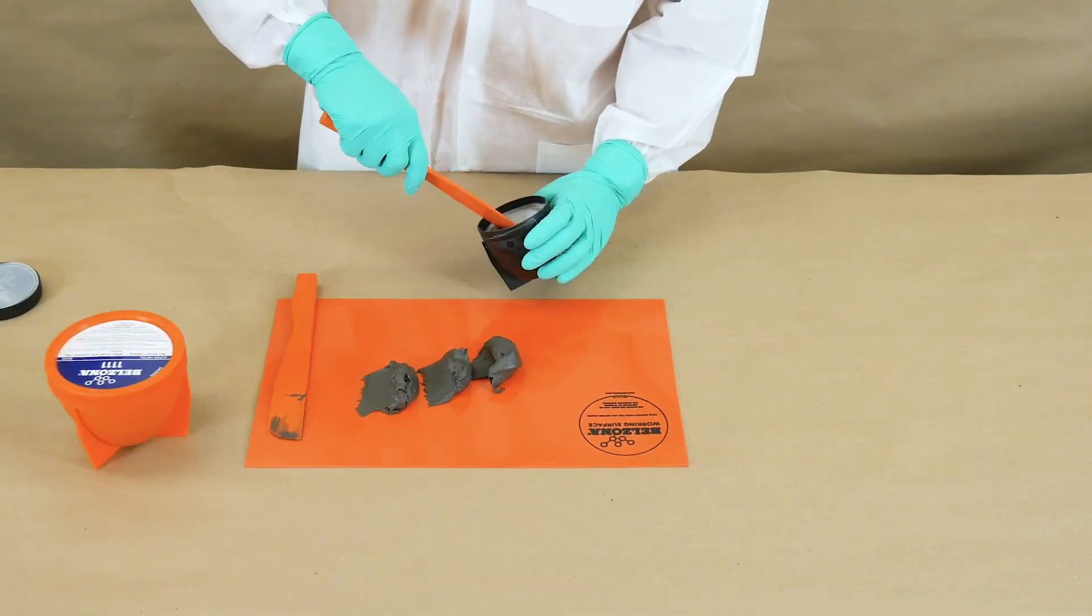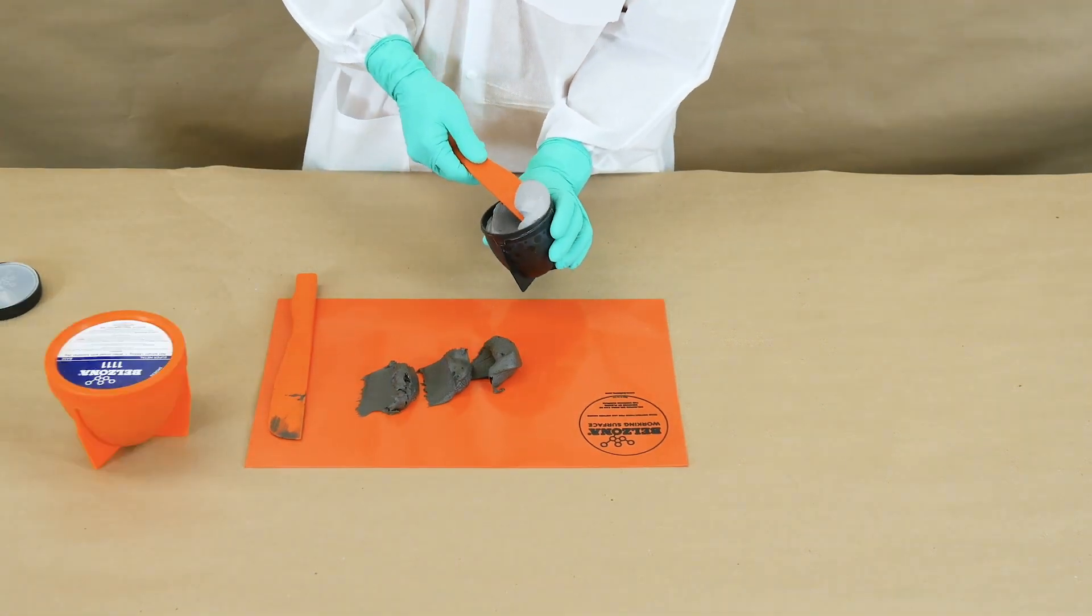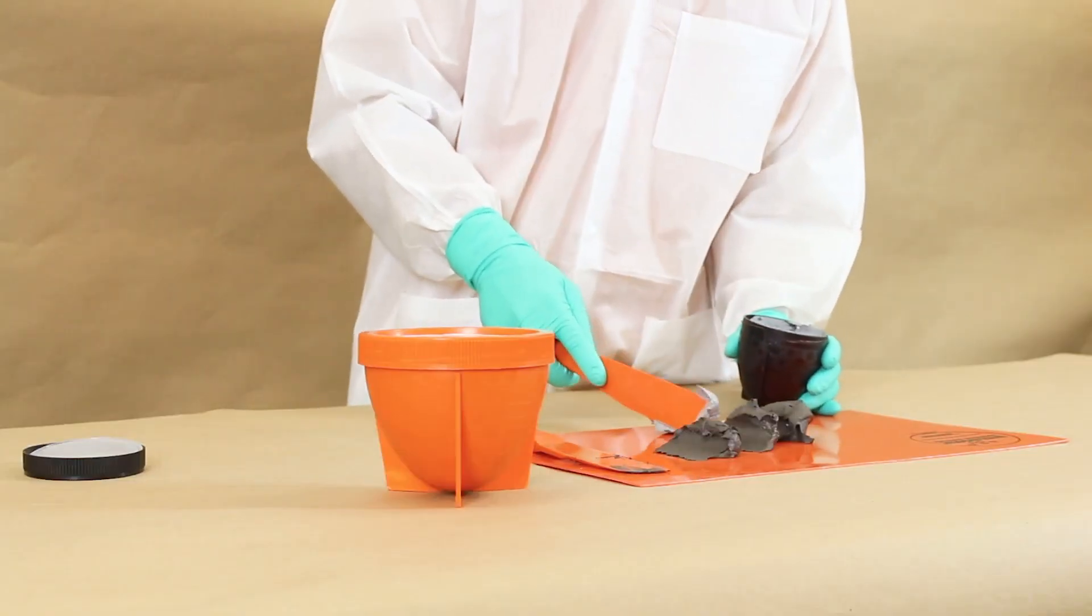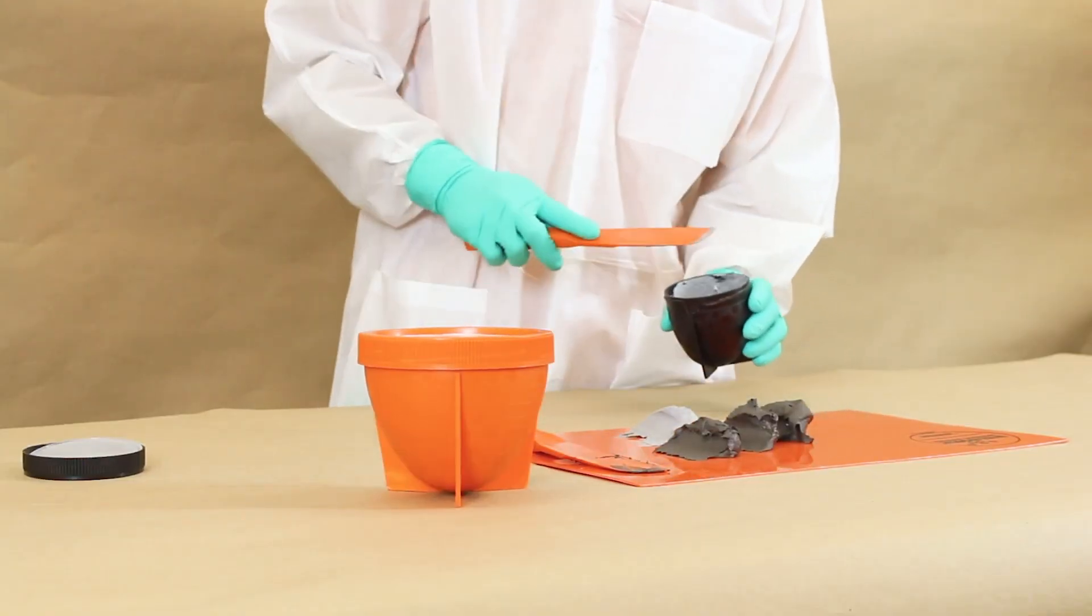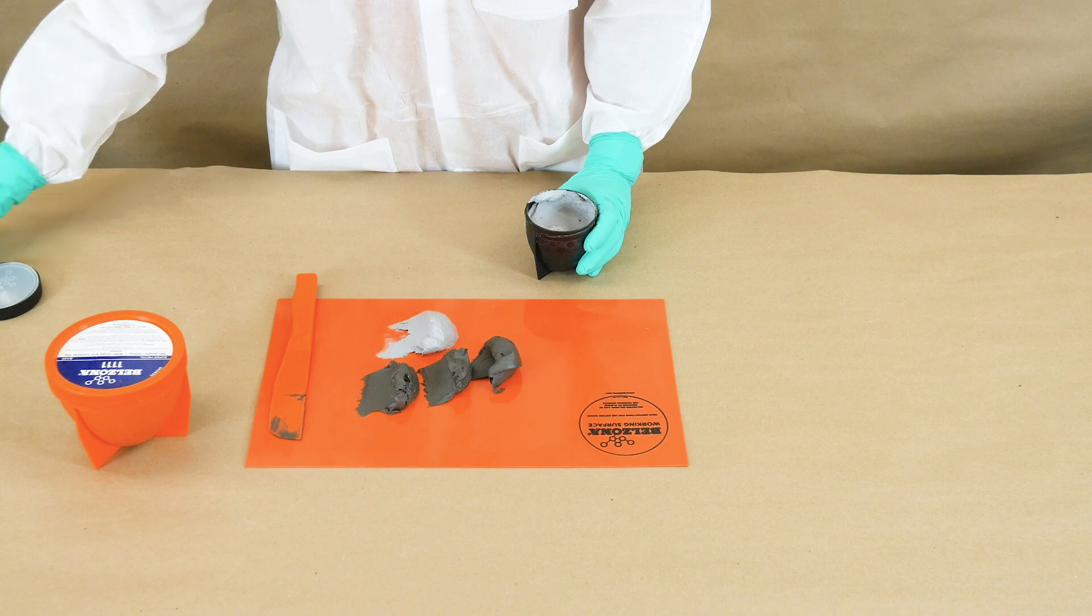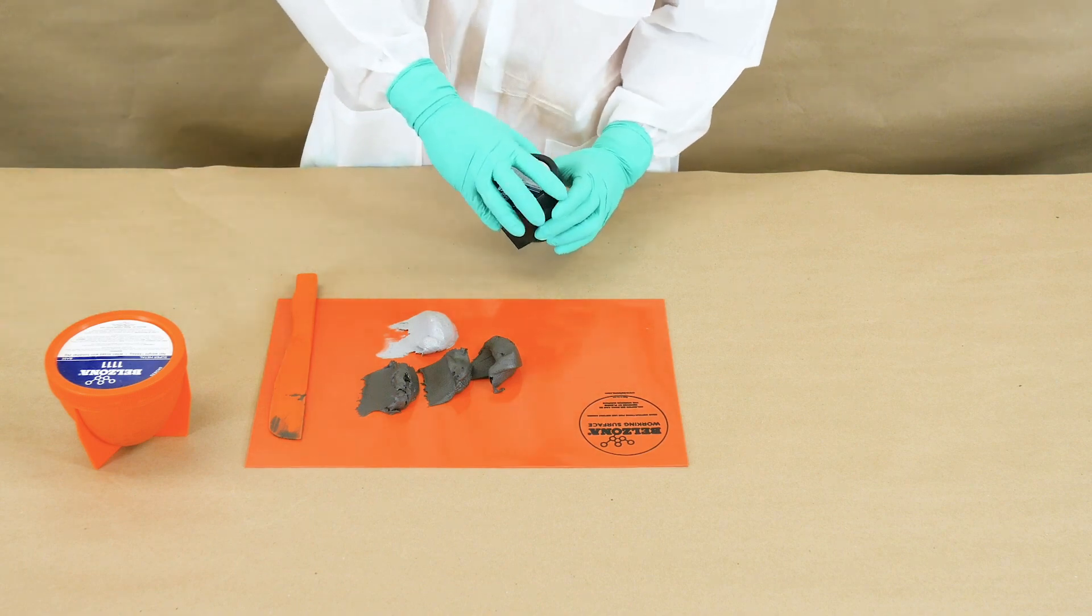Measure one part of Belzona 1111 solidifier and transfer it to the working surface. Place the seal and cap back onto the container to store for further use.